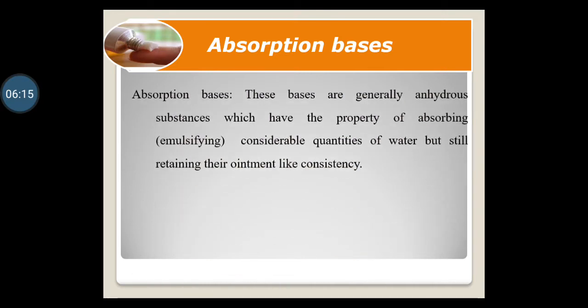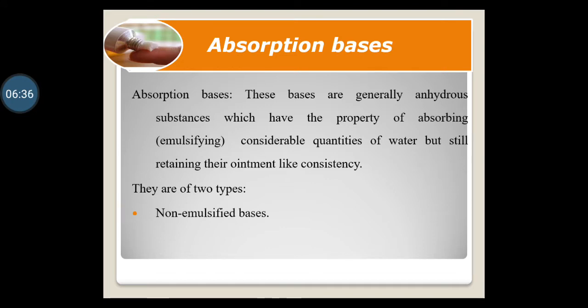Let us discuss absorption bases. These bases are generally anhydrous substances which have the property of absorbing — that is, emulsifying — a considerable quantity of water while still retaining their ointment-like consistency. They are of two types: first, non-emulsified bases; and second, water-in-oil emulsions. Non-emulsified bases absorb water and produce a W/O emulsion. Examples are wool fat, wool alcohol, beeswax and cholesterol.